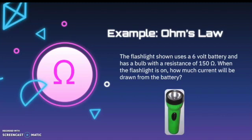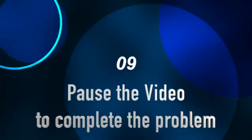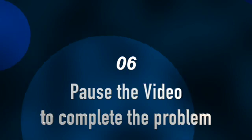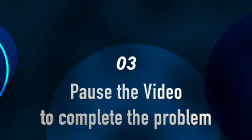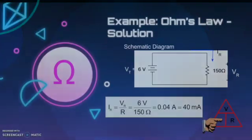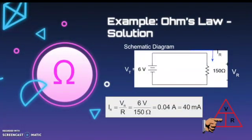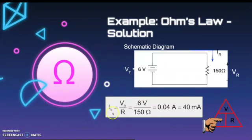Let's take a look at an example of Ohm's law. The flashlight shown uses a 6-volt battery and has a bulb with a resistance of 150 ohms. When the flashlight is on, how much current will be drawn from the battery? Take a moment to solve this problem. Looking at the schematic diagram, we can see all of those components laid out. Mathematically, we need to calculate voltage over resistance to get our current. The result is 40 milliamps, or 0.04 amps.